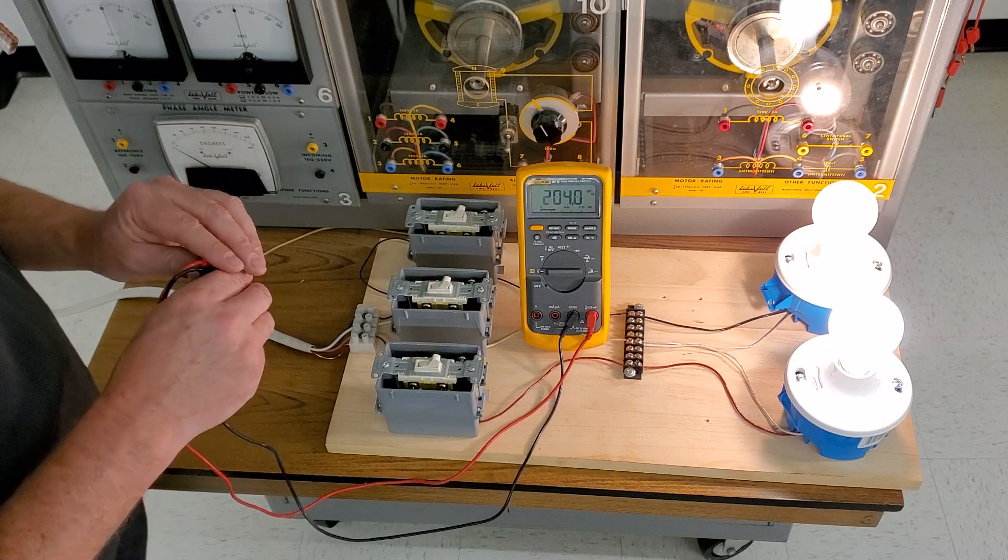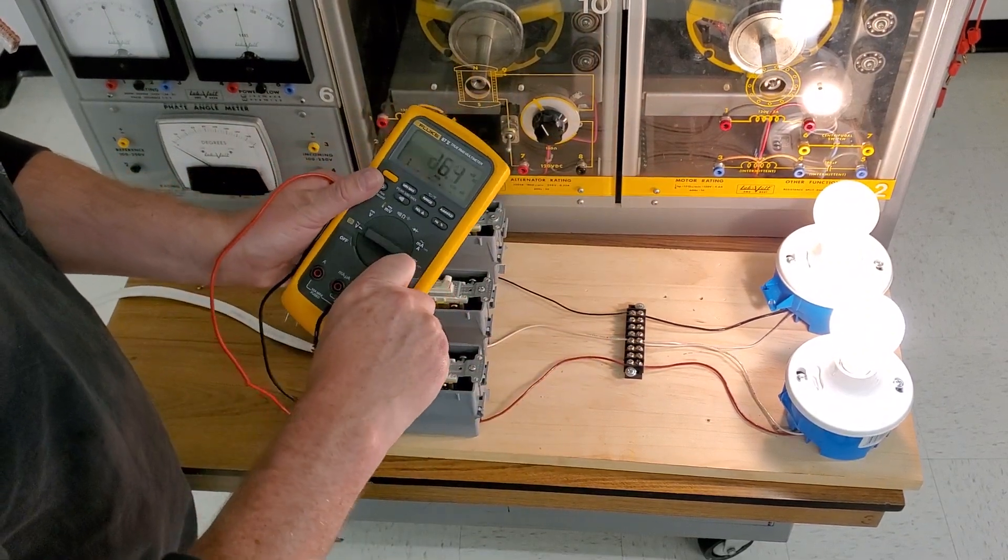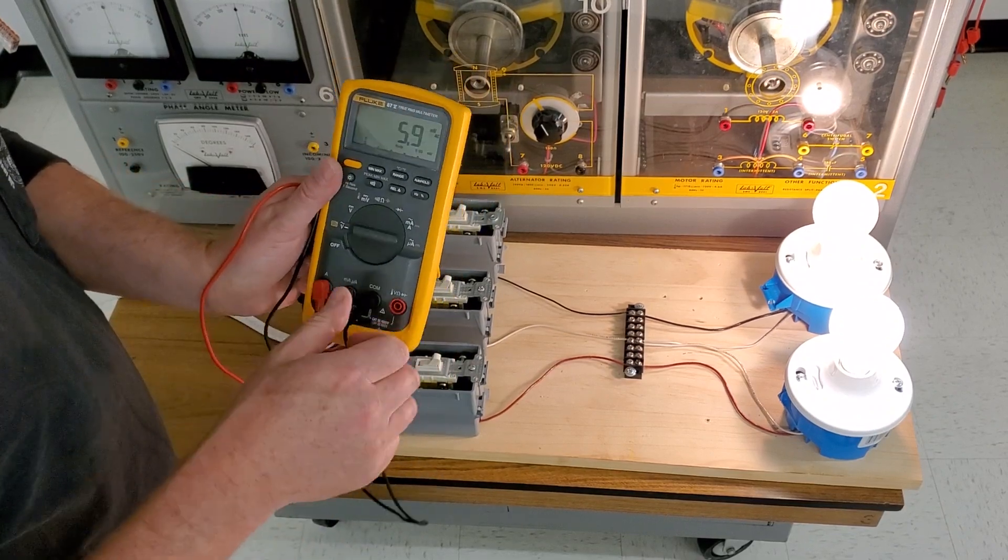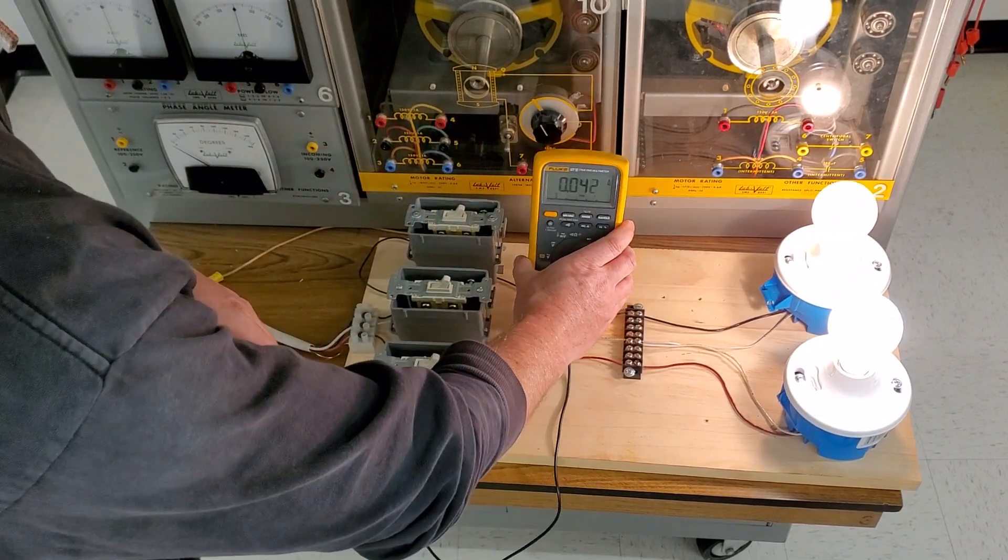The other thing that we can also do with this meter, and a lot of people don't do this because a lot of times we have amp clamps, is we can read current. We're going to turn our meter to current and we're going to put our meter in series with the circuit.